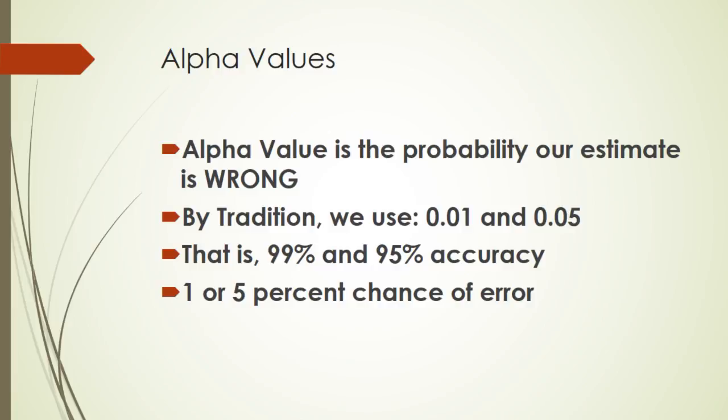So, some terminology. An alpha value is the probability that our estimate is wrong. Now, we start out in life saying, well, that shouldn't ever happen. We should be 100% sure. This is a statistics class. 100% sure means minus infinity to plus infinity. So if we want to be 100% sure of what the vote's going to be, if you're a campaign manager for some politician and they say, I need to be 100% sure of what the result's going to be, you say, negative infinity to positive infinity.